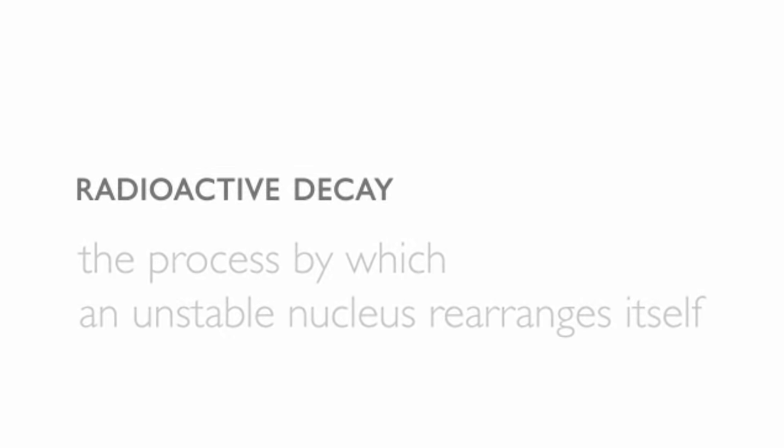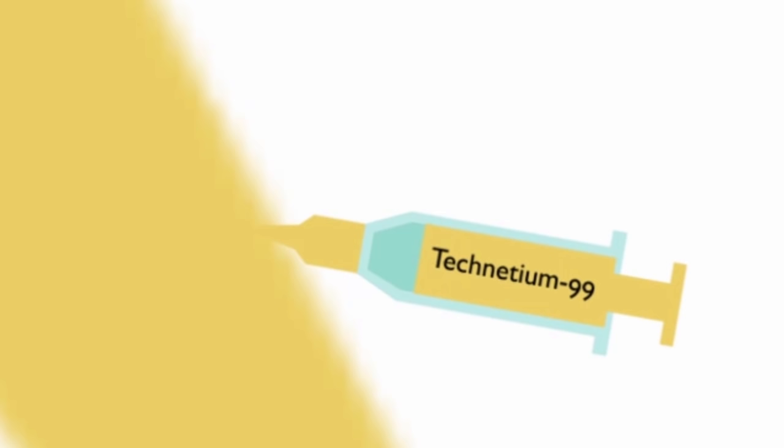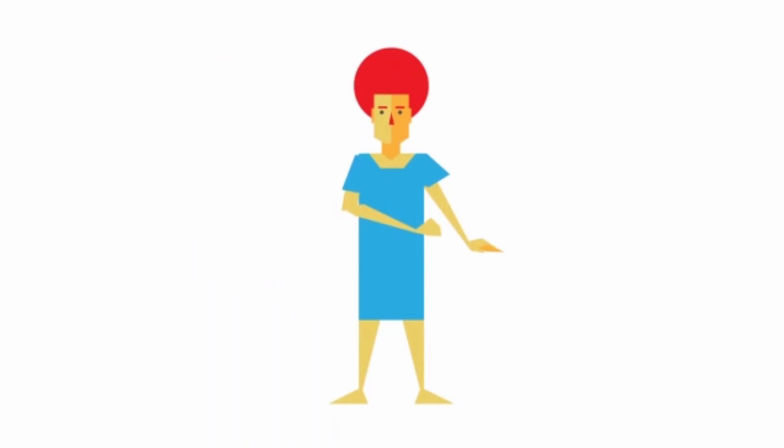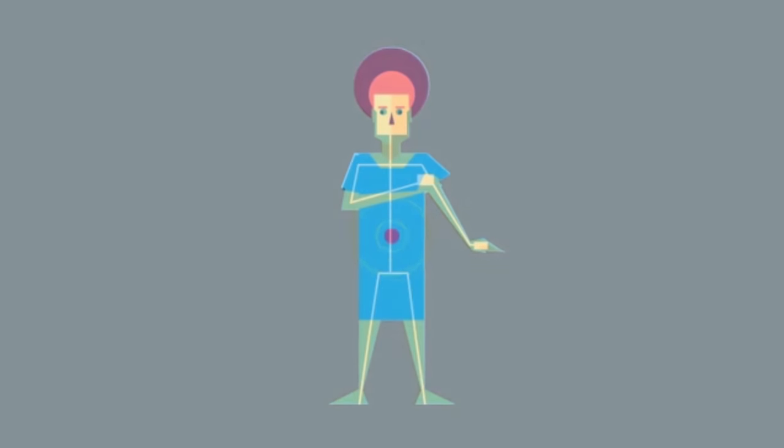Radioisotopes are often used in medicine to trace aspects of body chemistry or blood flow. For example, a small amount of the radioisotope technetium-99 may be injected into the bloodstream to show up on medical imaging and x-rays. And this is known as a medical tracer.